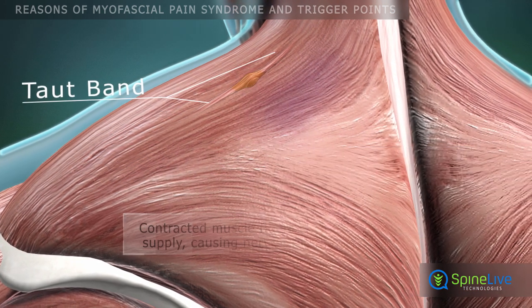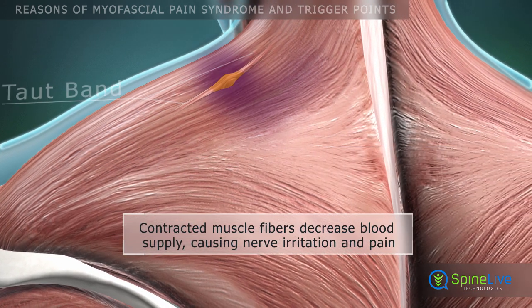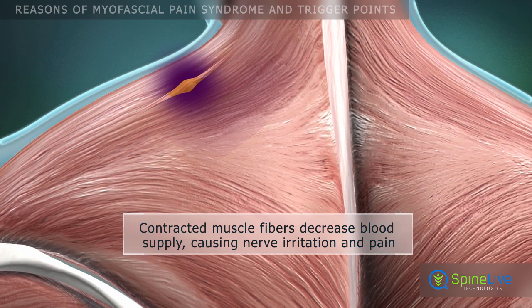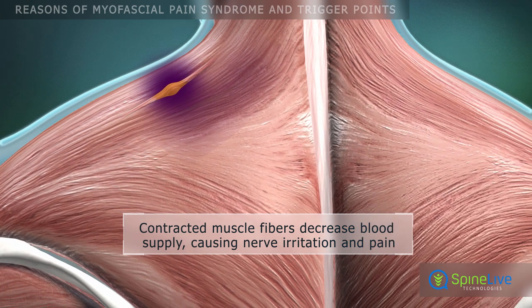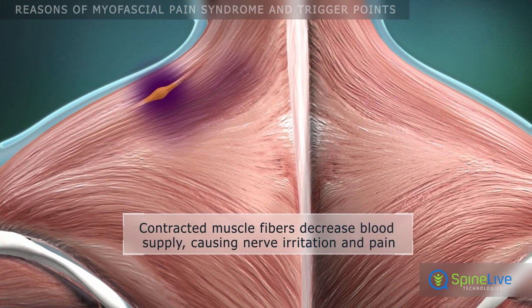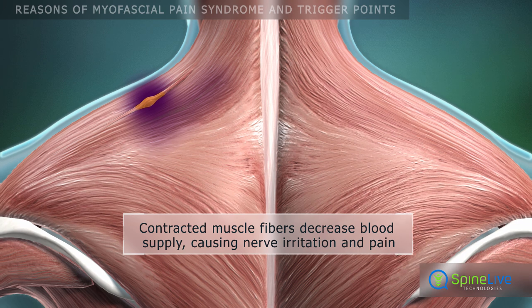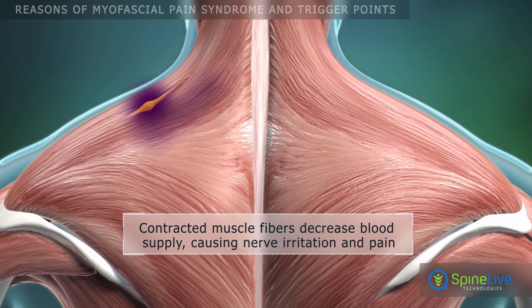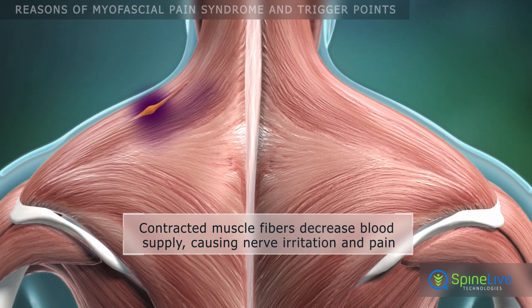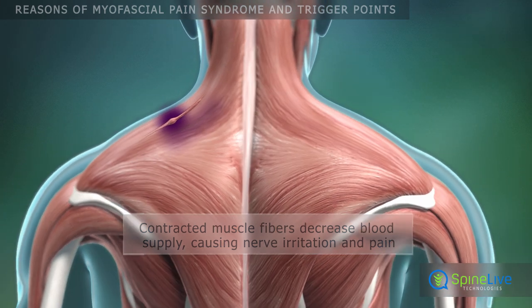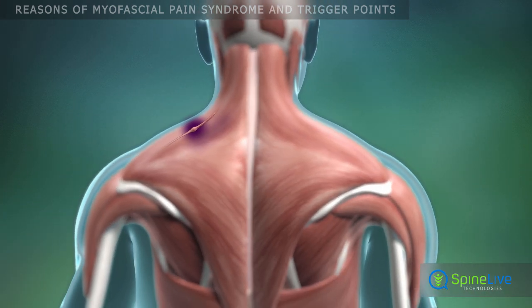The persistent contraction of muscle fibers compresses blood vessels and decreases their blood supply, leading to oxygen starvation and the accumulation of waste products. This irritates nerves and causes pain.